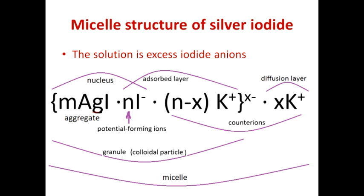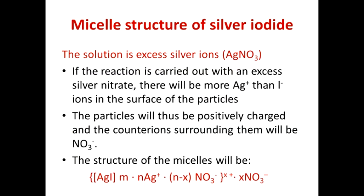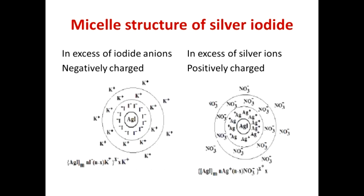In this micelle, AgI is the aggregate; I⁻ are the potential-determining ions with the same charge as the colloidal particle; K⁺ are the counter-ions — giving us the overall micelle structure. When prepared in excess of AgNO₃, Ag⁺ ions are adsorbed on the AgI surface, making the colloidal particle positively charged. The left micelle, made in excess of KI, is negative; the right one, prepared in excess of AgNO₃, is positive.